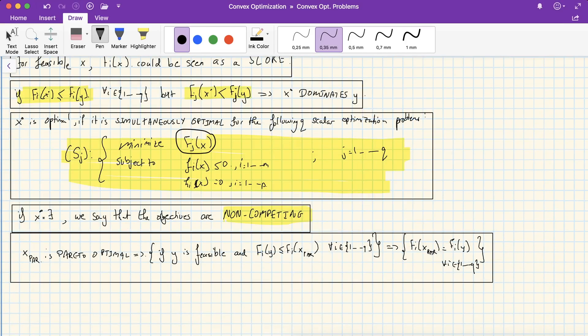If such an x star exists, we say that the objectives are non-competing. So there's no feasible point that does better than x star in some problems and vice versa. So all costs agree that x star should be optimal. In this case, you say that you have a non-competing problem or your objectives are non-competing.